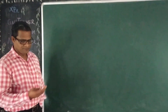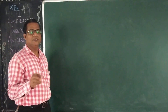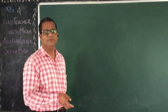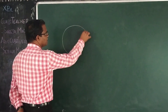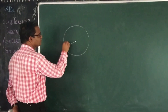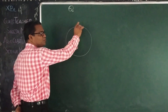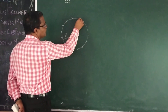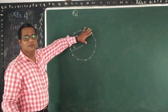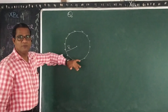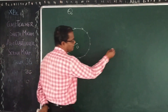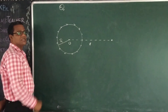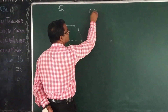Now, for the third application of Gauss's theorem, let us find the electric field at a point due to a uniformly charged spherical shell. Let us assume a spherical shell of radius R with a total charge Q distributed uniformly on its surface. If I consider a point outside at a distance r from the center of the spherical charge distribution, such that r is greater than capital R.